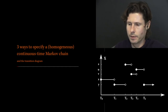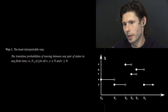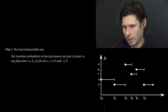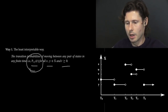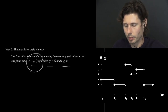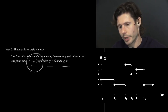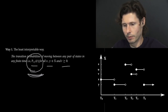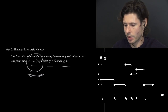By now we know there are three ways to specify a continuous time Markov chain. The first way is the least interpretable way. For every single pair of states x and y, and every single time t, you're given these transition probabilities. These are very useful quantities — it's important to know the probability of going from x to y in time t. But at the same time, these are going to be complicated expressions, and you're going to get very little insight from these complicated formulas as to how the chain is actually behaving.